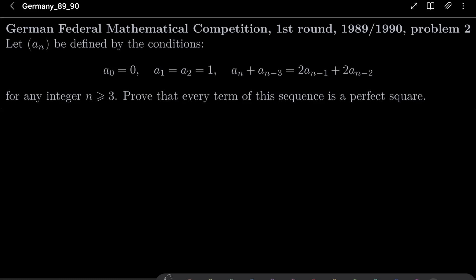Let a_n be defined by the conditions: a_0 = 0, a_1 = a_2 = 1, and a_n + a_{n-3} = 2a_{n-1} + 2a_{n-2} for any integer n ≥ 3. We wish to prove that every term of our sequence is a perfect square.